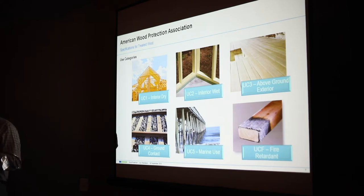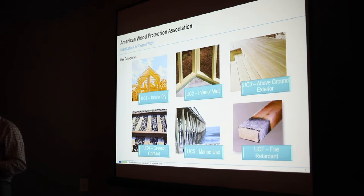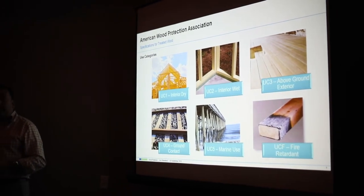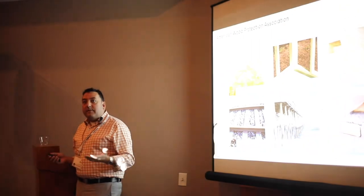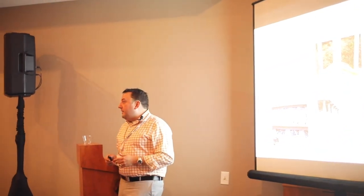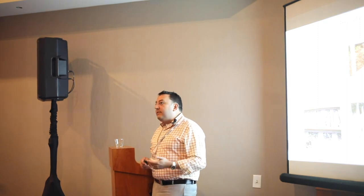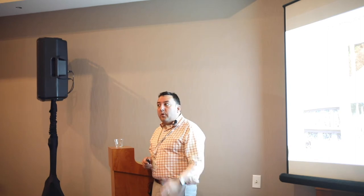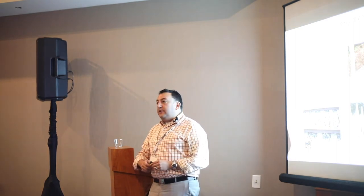UC3 is above-ground exterior, subdivided into UC3A (protected, such as coated or architecturally shielded from elements) and UC3B (above ground but exposed to elements — like a deck board or fence board). UC4 is ground contact, subdivided into 4A, 4B, and 4C for increasingly heavy-duty use; utility poles are designated UC4A, B, or C depending on geography. UC5 is for marine use.